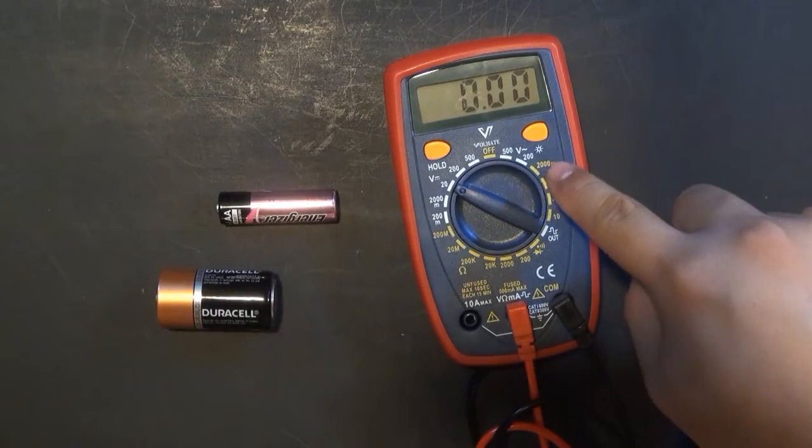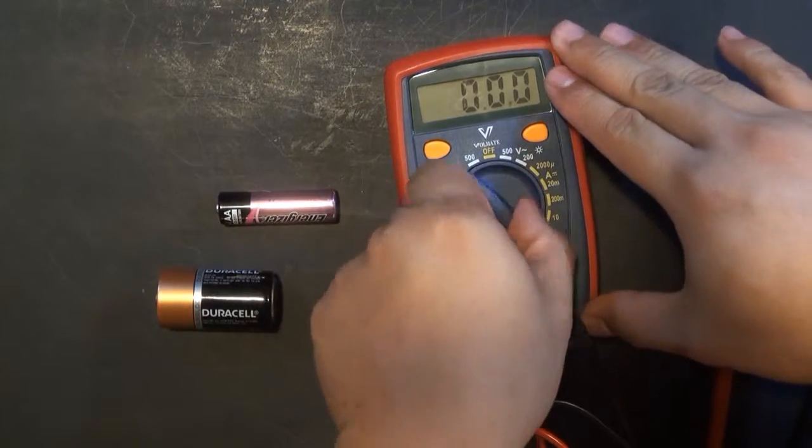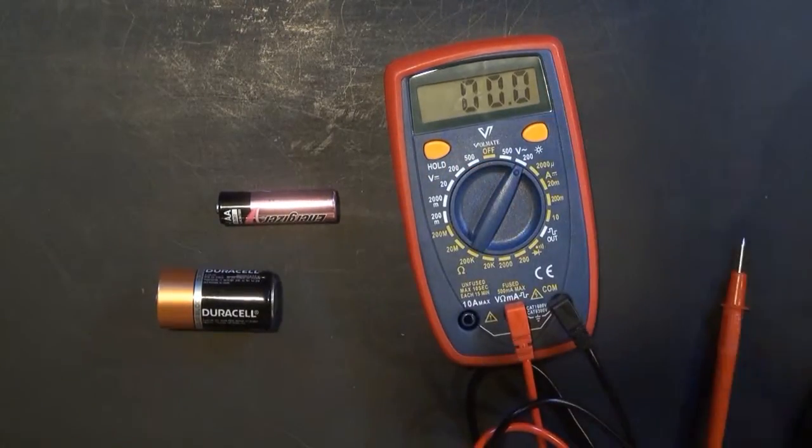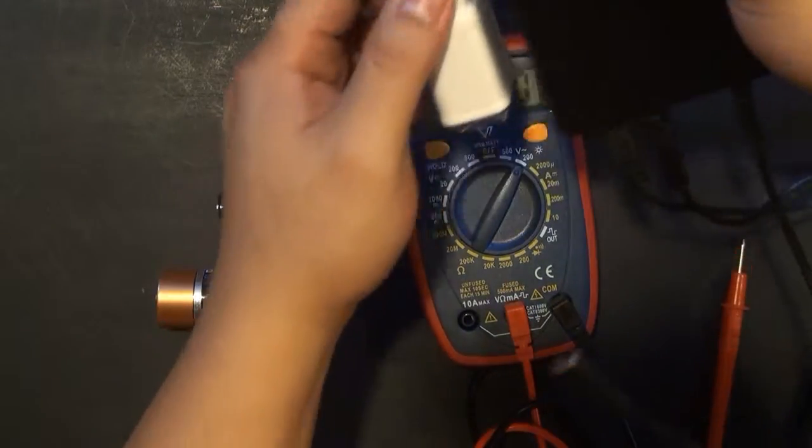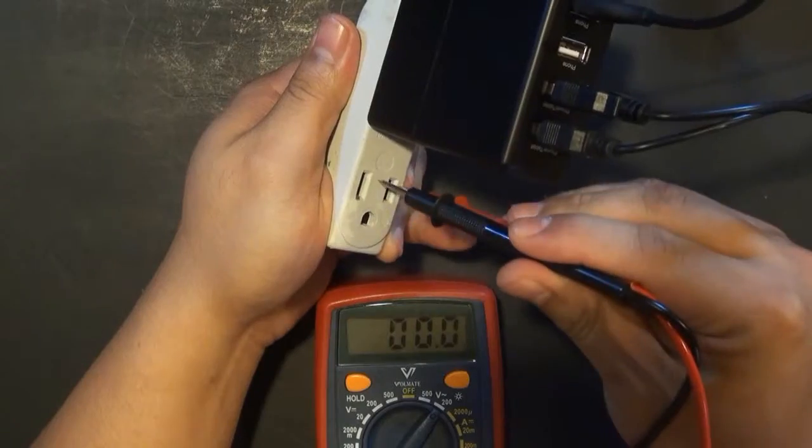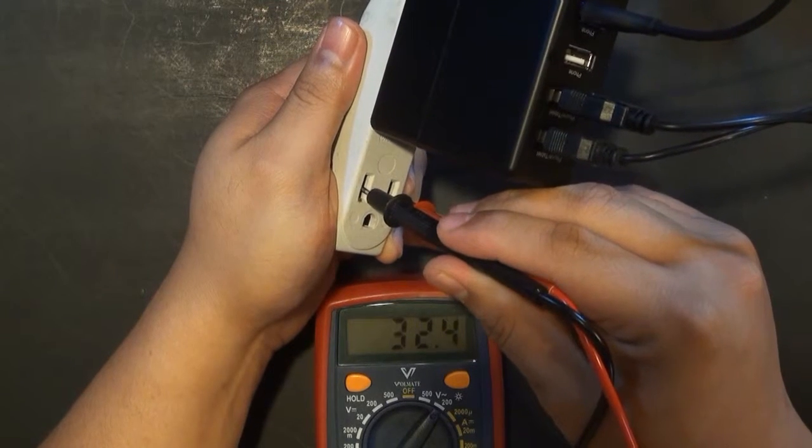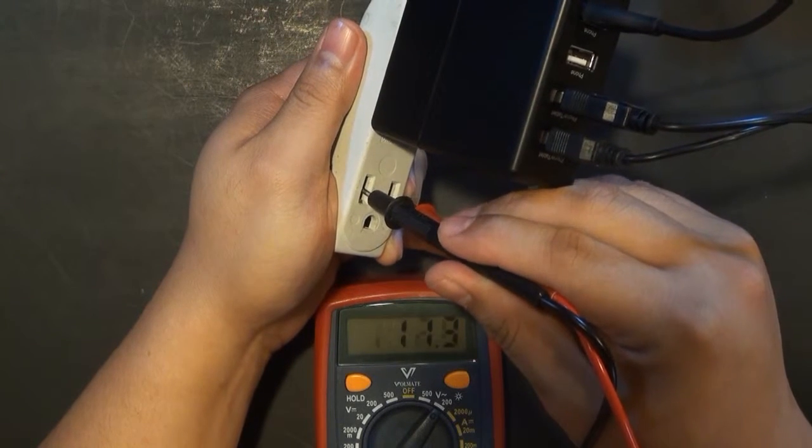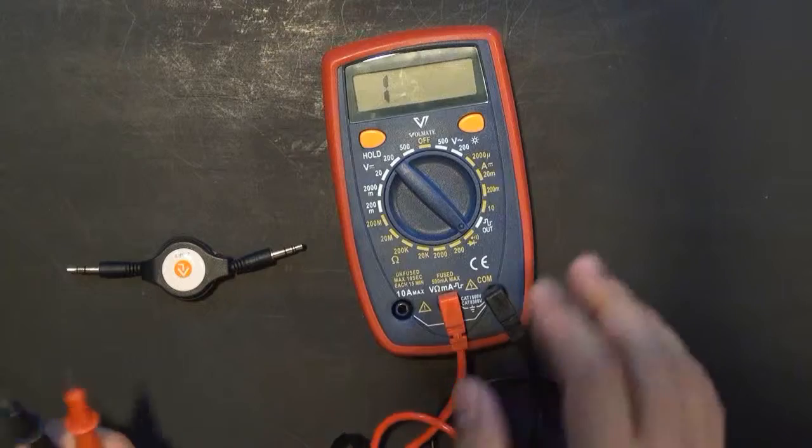So for AC, it's going to be this signal. And I'm going to go for up to 200. So I have my outlet here. There you go. 122 voltage. All right.